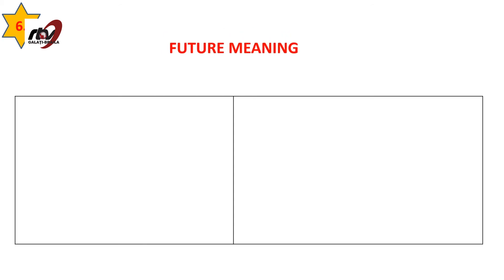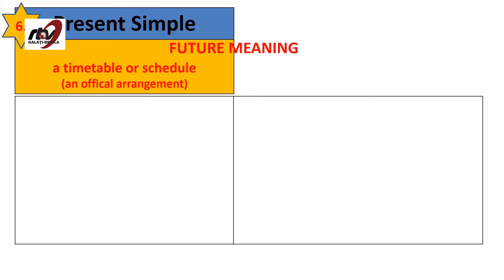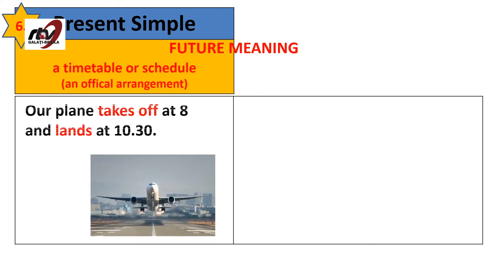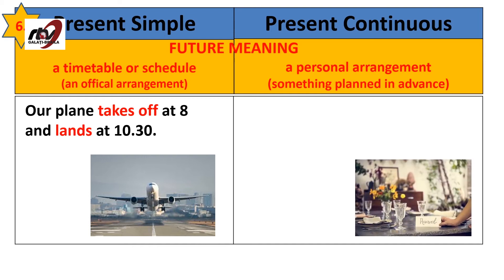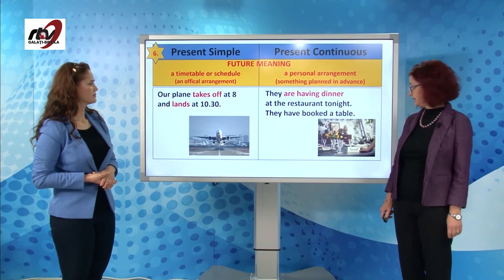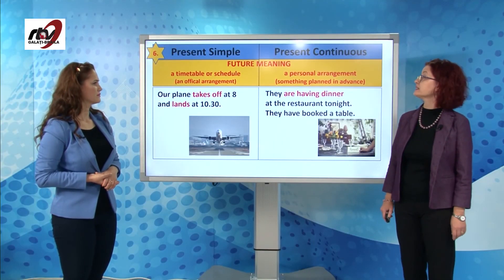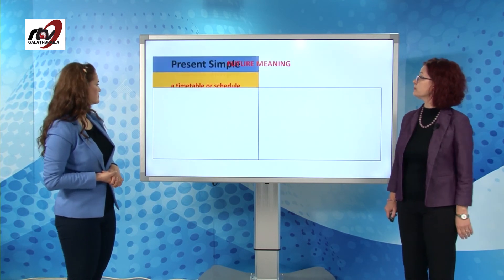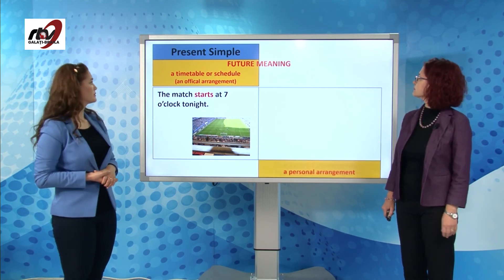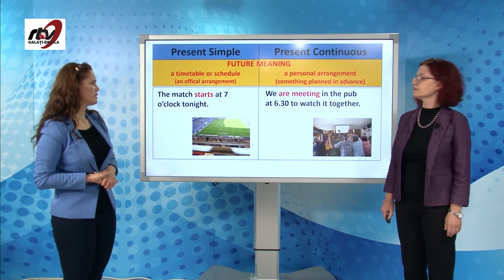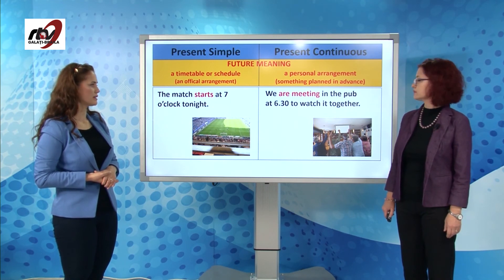The sixth and final use is that of future meaning. With present simple it expresses a timetable or schedule — an official arrangement. Our plane takes off at 8:00 and lands at 10:30. Whereas with present continuous we have something personal — a personal arrangement, something planned in advance. They're having dinner at the restaurant tonight — they have already booked a table. Another example: the match starts at 7 o'clock tonight and they are meeting in the pub at half past six to watch it together.